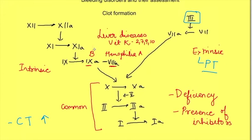Intrinsic pathways are assessed by activating factor 12, and this is known as activated partial thromboplastin time. If any factors of the intrinsic and common pathway are affected, aPTT will be prolonged. When common pathway factors are affected, both aPTT and PT will be prolonged.